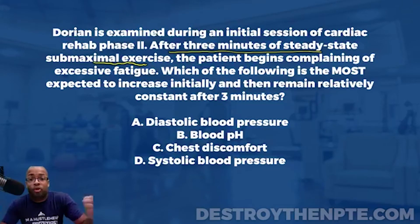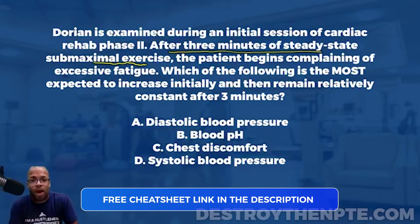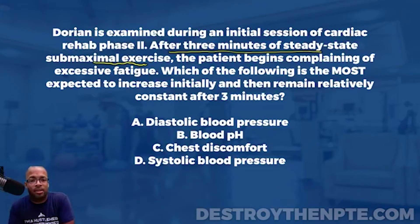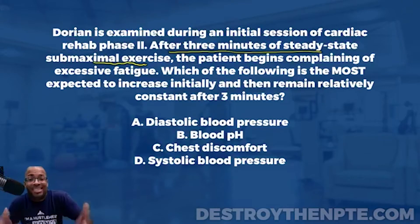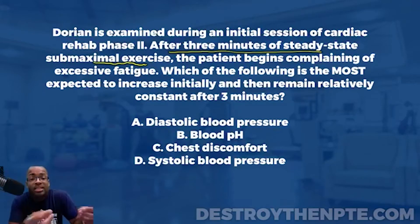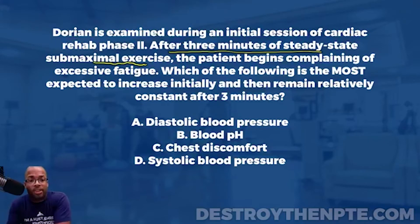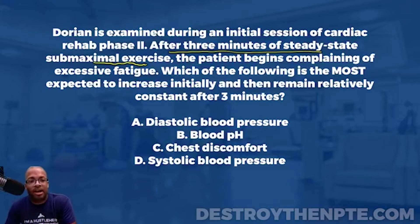Think about regular progressive exercise — sprinting full speed. Your muscles are continuously requiring a lot of oxygen and your heart is trying to pump blood and get oxygen to those muscles. That's not steady state, because in that situation the muscles may be requiring more than what is being delivered. Steady state is when the energy required by the muscles equals the amount of oxygen delivered for ATP production.